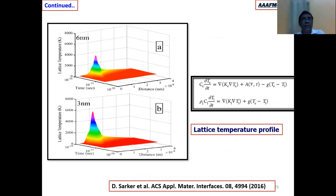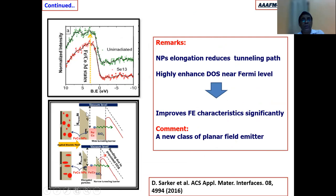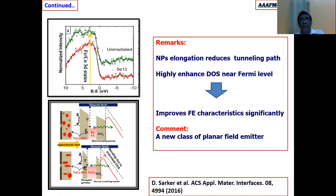From the thermal spike model, we computed the typical temperature of nanoparticles of various sizes — as nanoparticle size is reduced, the thermal spike temperature increases. The enhancement of field emission can be explained by two factors: nanoparticle elongation reduces the tunneling path length, and ultraviolet photoelectron spectroscopy has shown that the density of states of electrons near the Fermi level increases. Both the elongation and the enhancement of DOS near the Fermi level lead to the high enhancement of electron current density by the field emission process.